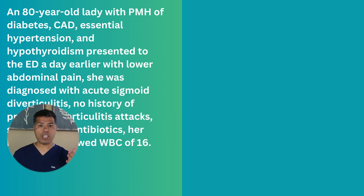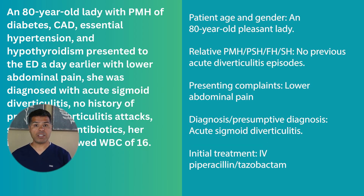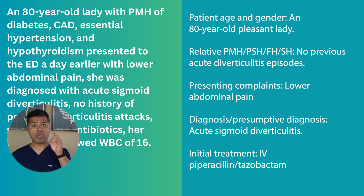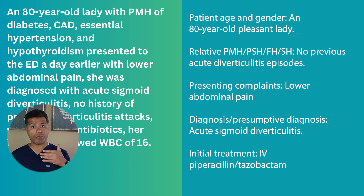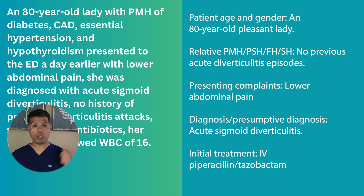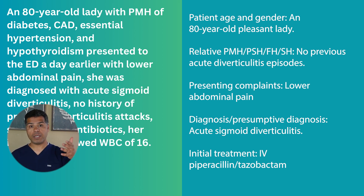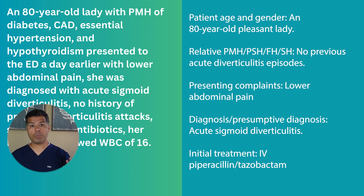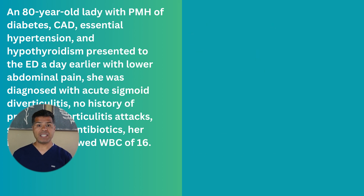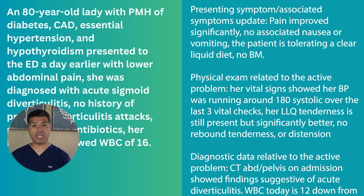Applying the framework: patient age and gender — an 80-year-old pleasant lady. Relative past medical history — the only truly relevant history here is no previous acute diverticulitis episodes, because that will affect future treatment. Chief complaint — lower abdominal pain. Diagnosis — acute sigmoid diverticulitis. Initial treatment in the ED — IV piperacillin-tazobactam.